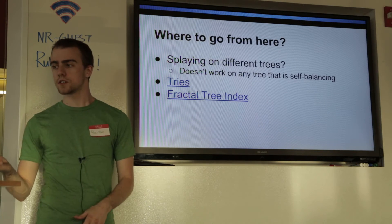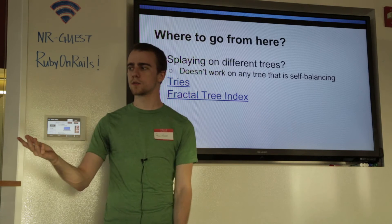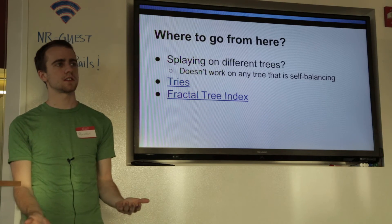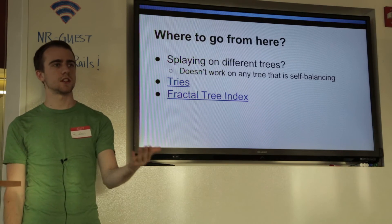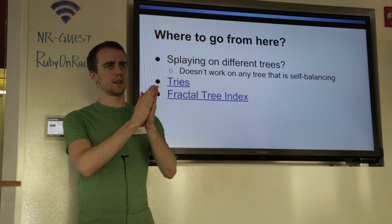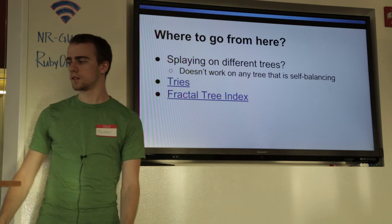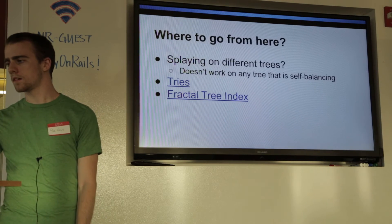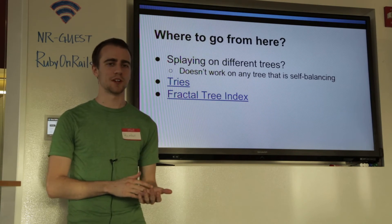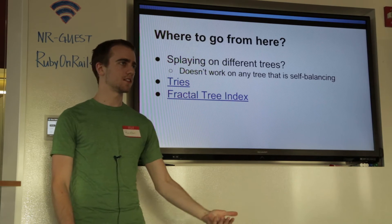I actually found splay trees in a Hacker News thread about cool little-used data structures. A couple referenced were trie trees — spelled with an i — where you're effectively building prefix trees, commonly used for spell checkers and search engine tokenizers. Fractal trees are another way of implementing B-trees and B-plus trees with a buffer zone. My main point is: don't rely on just hash maps and arrays for everything when you could make a data structure that works well for your specific needs.